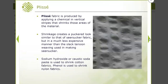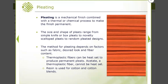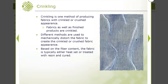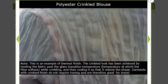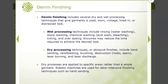Plissé shrinks certain areas to create a puckered look. Pleating: this is a heat-set pleated polyester that stays permanent. Crinkling creates a crinkle or crushed appearance by mechanically distorting the fabric — sometimes a resin is applied and cured in that state. This is a crinkled polyester blouse. Stiffening finishes use starch to make the fabric stiffer.